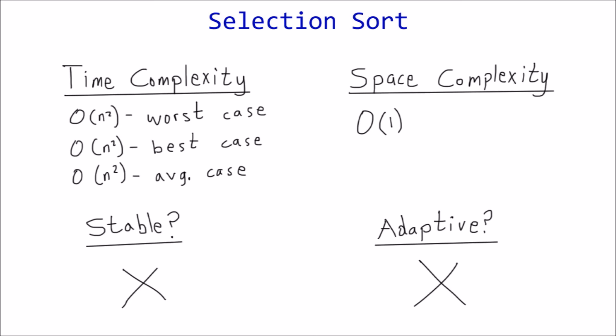In conclusion, selection sort is not a very efficient sorting algorithm, particularly with large lists since it's order n squared for all cases. And although it usually performs better than bubble sort because of far fewer needed swaps, insertion sort is normally the preferred alternative. I hope this tutorial was helpful and easy to understand. The next video will cover the bubble sort algorithm. Thanks for watching.